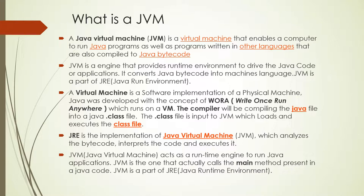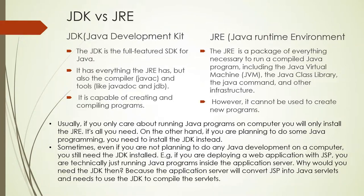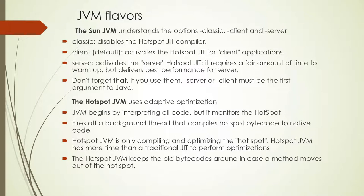We saw the different types of JVM available — Java, GRE. 'Write Once Run Anywhere' — JVM is the implementation of JRE which provides the platform to run your code. We also understood the difference between JDK and JRE — Java Development Kit is capable of creating and compiling; JRE is the environment that helps host your program and run your bytecode. There are different JVM flavors — Sun JVM and Hotspot JVM are the two industry JVMs used most. Inside the Sun JVM, there are three options: classic, client, and server. Classic disables the Hotspot JIT compiler.